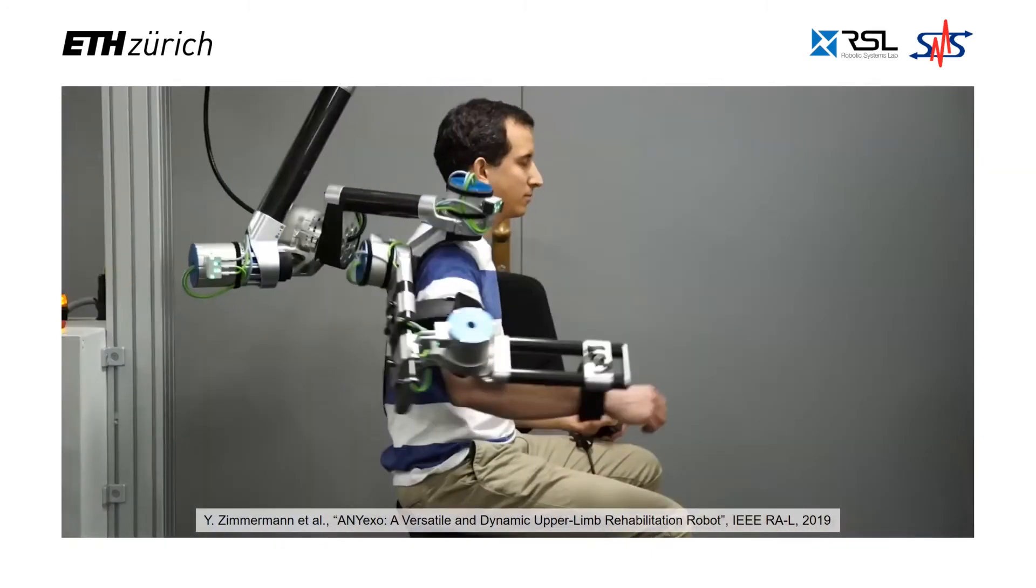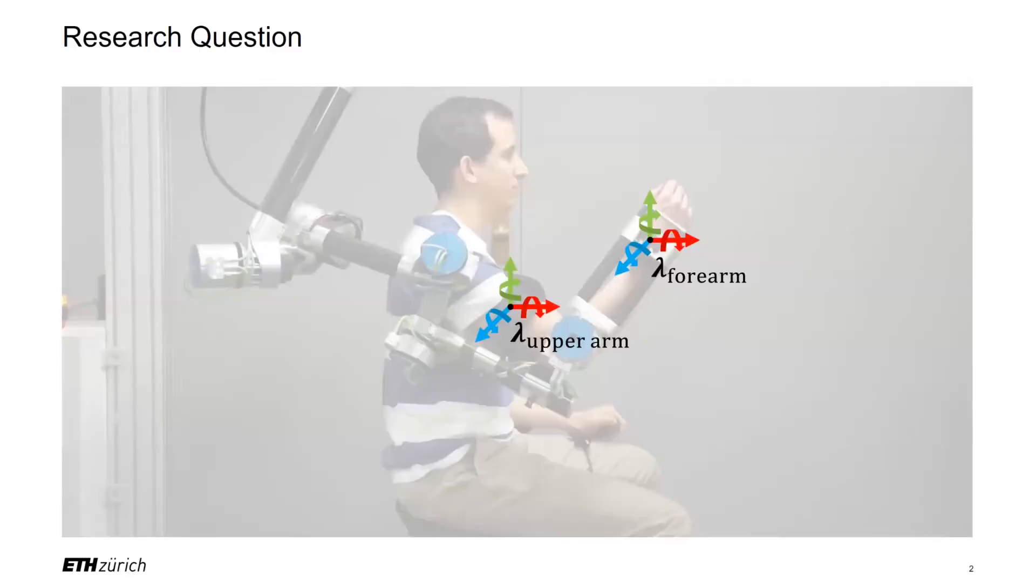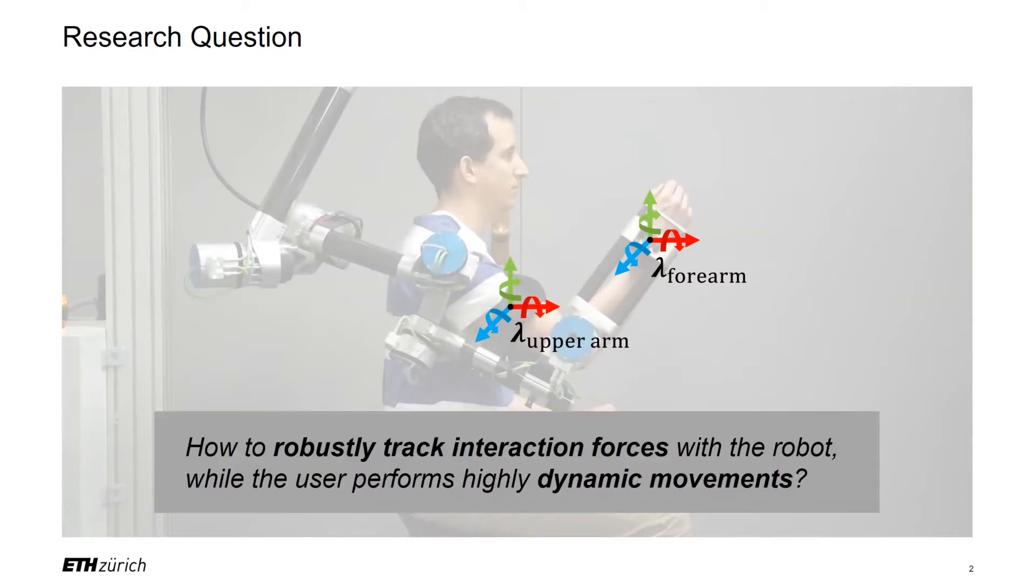So why do we actually need the robot? The purpose of the exoskeleton is to render interaction forces to the user while they are otherwise free to move their arm. The research question for this work is how to robustly track interaction forces with the robot while the user performs highly dynamic movements.